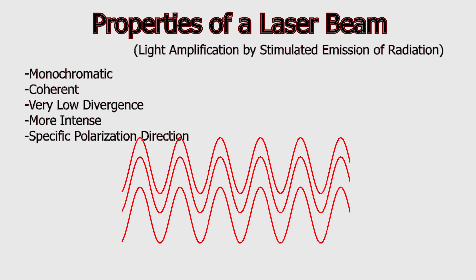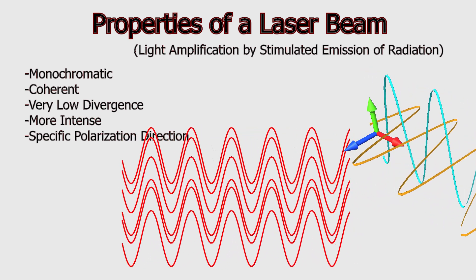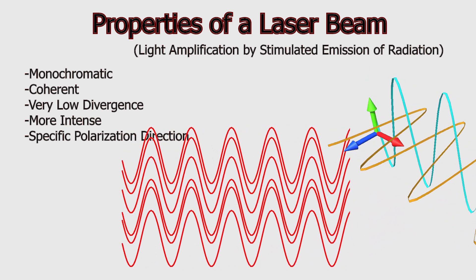A laser beam is more intense compared to other light sources, meaning it contains a greater number of photons, which increases the energy per unit area. A laser beam has a specific polarization direction, meaning the oscillation direction of its electric field is fixed and does not change over time.